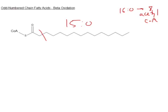So I'm just going to chop this thing up into pieces every two carbons. Now we come to a problem. We have made one, two, three, four, five, six acetyl-CoAs, and then we have a three-carbon piece left over.